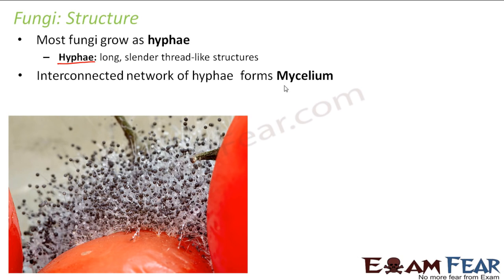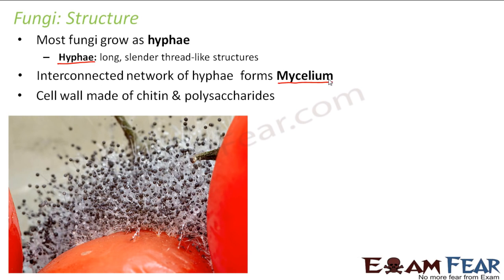An interconnected network of hyphae forms the mycelium. Each hair-like structure is a hyphae, and many hyphae together forming a web-like or mesh-like structure make up the mycelium. The structure of mycelium differs in different types of fungi. The cell wall is made up of chitin and polysaccharides — this is a speciality of fungi, as they are the only organisms whose cell walls are made up of chitin, giving them a relatively rigid cell wall.